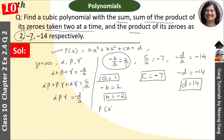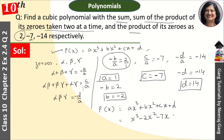So, p(x) is equal to, humaara jo polynomial hota hai, that is ax³ + bx² + cx + d. Aur a, b, c, d ki values daalne se yeh ho jayega: x³, b hai humaara minus 2, so minus 2x²; c hai humaara minus 7, toh minus 7x; aur d hai 14, toh plus 14. Aur yeh ho gaya humaara answer.